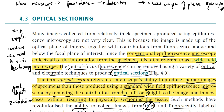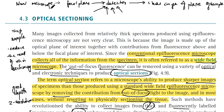Unfortunately, a microscope is not this specific. In a real microscope, light from sources outside the focal plane also reaches the detector. So light from different sources also comes to the detector, which is not what happens in the ideal microscope.